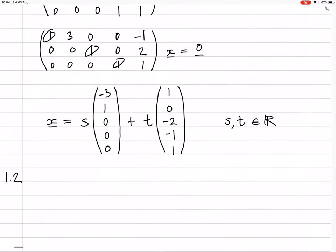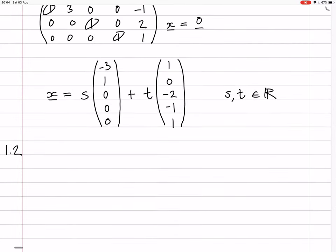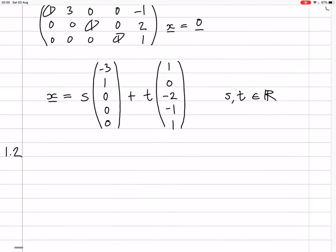Question 1.2: What is the dimension of the null space of A? It's 2 because there are two basis vectors. We found in 1.1 that there are two linearly independent vectors in the solution.